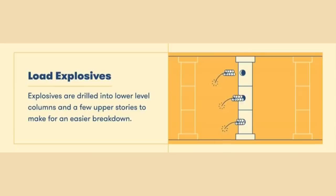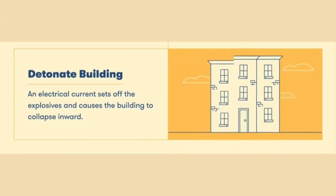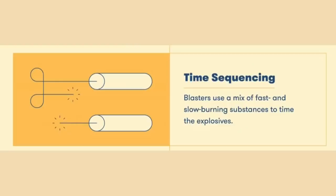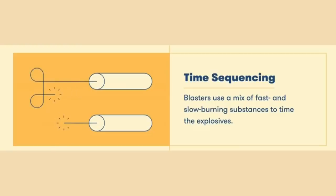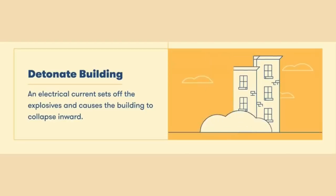The fourth step is loading explosives. The explosives are bored into columns, generally in support columns and a few upper stories, in order to make it easier to break the building into smaller pieces. Finally, time detonation — blasters first build up an electric charge. When the current is sent through the wire, it heats up and ignites the flammable substance, setting off the main explosive. Blasters can time their detonations by setting slow-burning materials in order to delay the explosions.